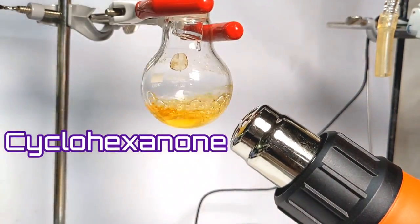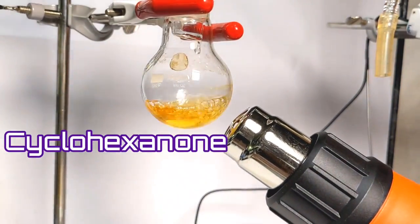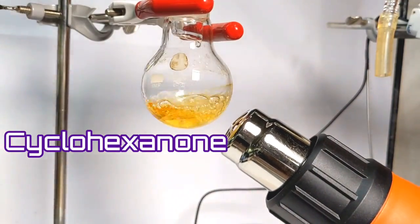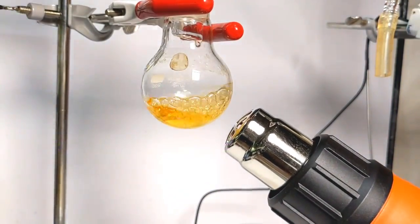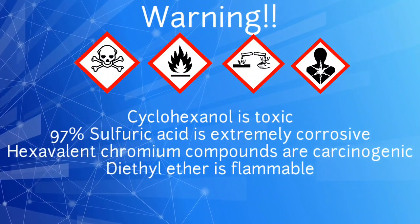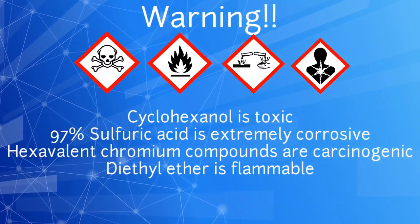Today we will synthesize cyclohexanone by the oxidation of cyclohexanol using sodium dichromate. Please take note of this important warning before attempting this synthesis and do it at your own risk.